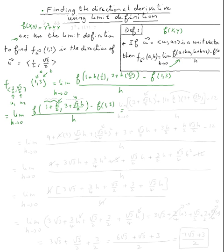So I need to plug all of this into x and all of this into y. That gives us (3 + √3·h/2)² plus (1 + h/2)(3 + √3·h/2), minus f(1, 3). Plugging in x = 1 and y = 3: 3² + 1·3 = 9 + 3 = 12. So it's minus 12, all over h, with the limit as h approaches zero.